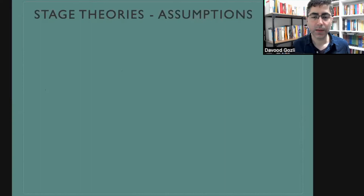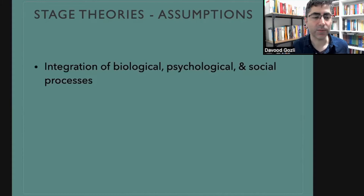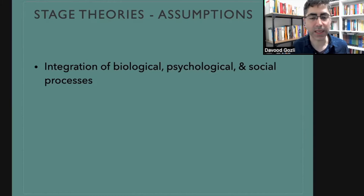Before getting into Freud's theory, let's talk about the assumptions these types of theories are committed to. They all say that by talking about stages, we are integrating different levels of analysis: biological processes, psychological processes, and social processes. Each stage reflects all of these levels, and when a person moves from one stage to the next, that reflects changes in biology, psychology, and the relationship between the person and the social context.